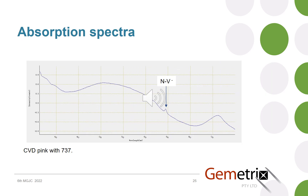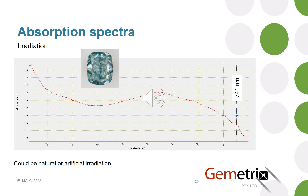If we look at the absorption spectra of some stones, here's that same one, and you can see the negatively charged NV centre there acting as an absorption. Where an absorption spectrum can show a defect not revealed by PL — mind you, it depends on the wavelength — at 405 nm laser, that is the 741 nm GR1 line. That does show up in the absorption spectra, as seen in this example of a bluish-green diamond. But that really shows that irradiation is the cause of the colour; it doesn't actually tell you, on the basis of the spectrum alone, whether that irradiation is artificial or natural.